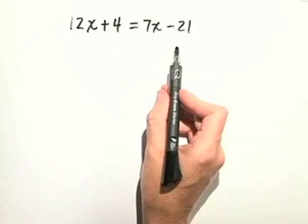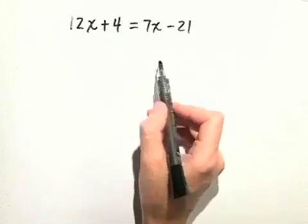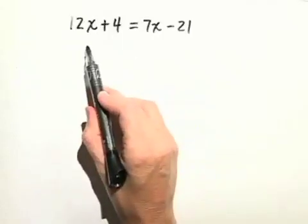So we need to decide which side we want to put the variable on and which side we want to put the constant on. Let's go ahead and put the variable on the left-hand side in this case.